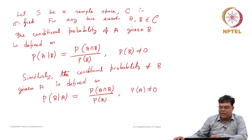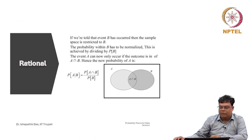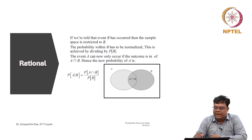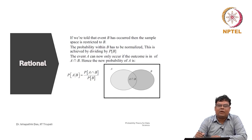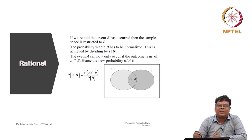Let us discuss the rationale behind it. If you are told that event B has occurred, then the sample space is restricted to B. Like the example of throwing a die — whenever it is informed that only even numbers occurred, we need not consider the full sample space {1,2,3,4,5,6}. The sample space is now restricted to B, which is the even numbers {2,4,6}.